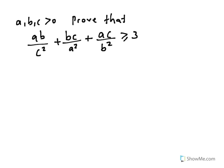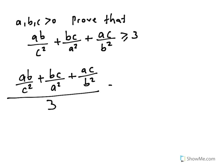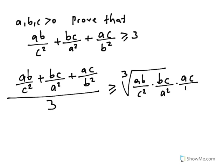The third example: if A, B, C are positive reals, prove that AB/C² + BC/A² + AC/B² ≥ 3. Applying the AM-GM inequality for 3 terms, we have (AB/C² + BC/A² + AC/B²)/3 ≥ ∛(AB/C² · BC/A² · AC/B²).